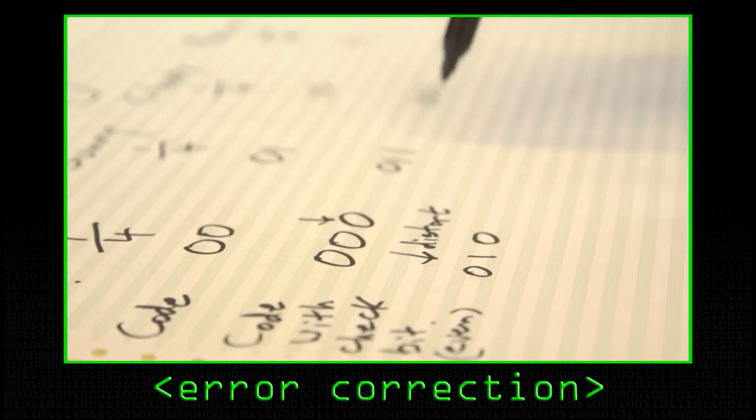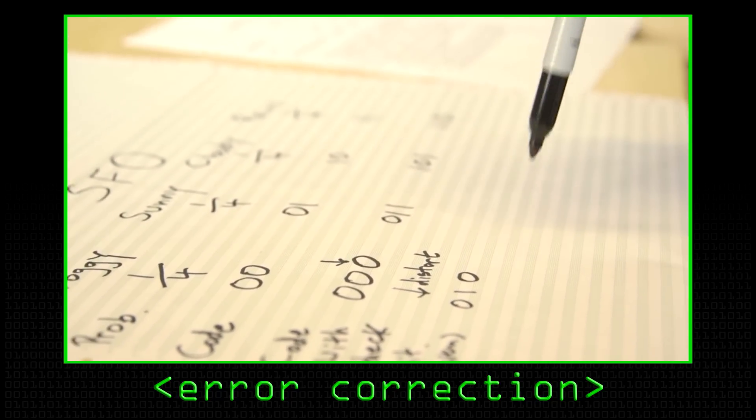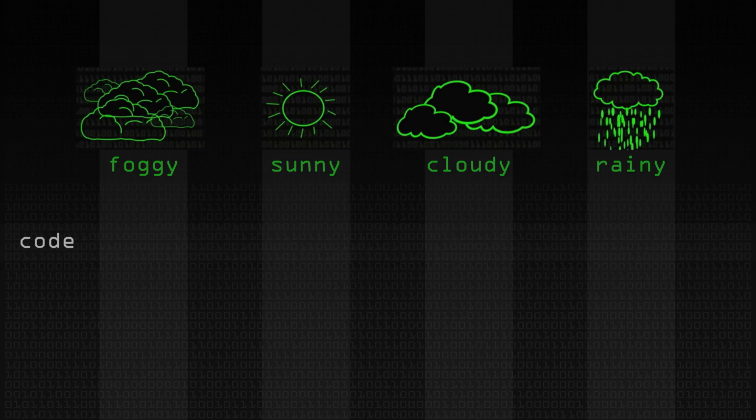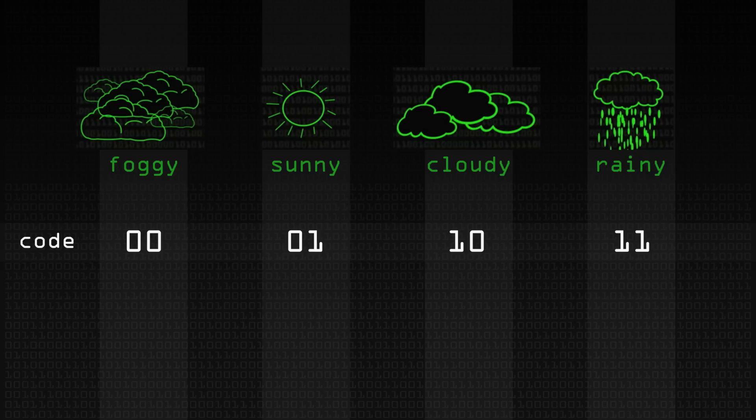What we've done here is split them up into four good codes that are meaningful and four bad ones. We've been working with this model of San Francisco weather: it's either foggy, sunny, cloudy, or rainy, and you get about 25% of each of those states. So the probability is a quarter. It's a two-bit code. Foggy: 0,0. Sunny: 0,1. Cloudy: 1,0. Rainy: 1,1. Four states, four different bit patterns, two bits needed.